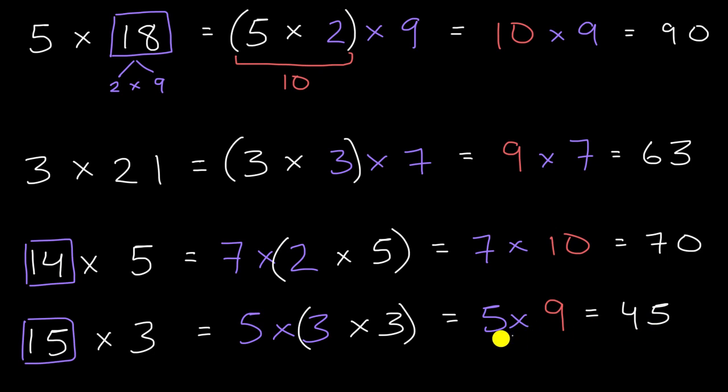And another way to get to 45, you could say, hey, 5 × 10 is 50. So 5 × 9 is going to be 5 less than that, which is also 45.